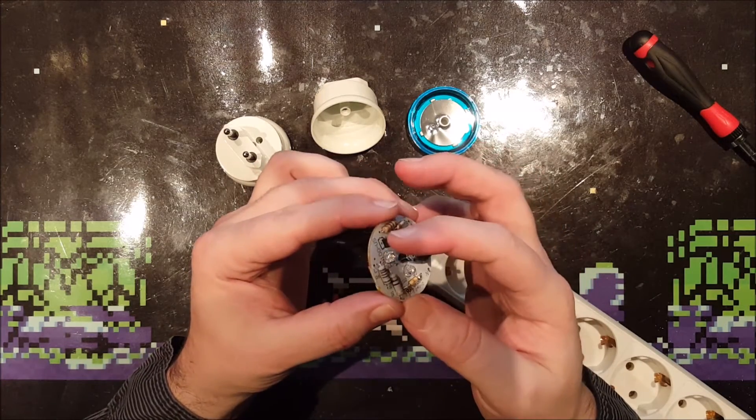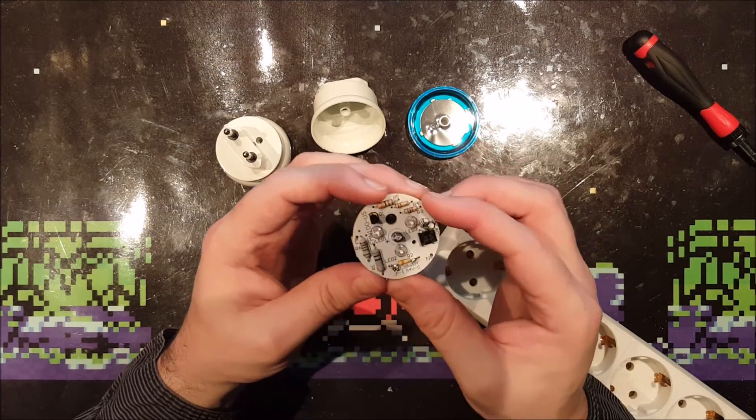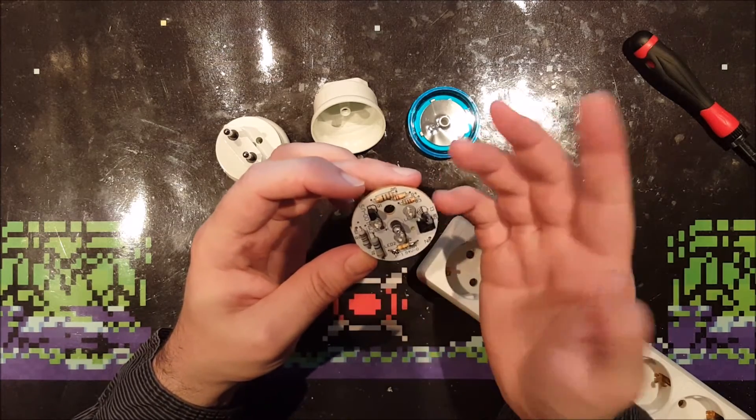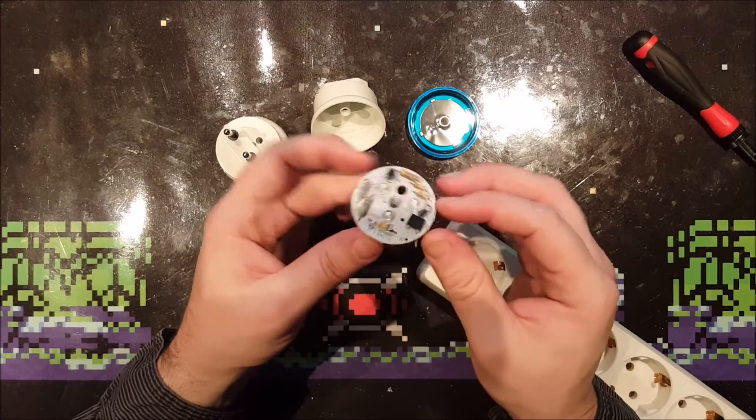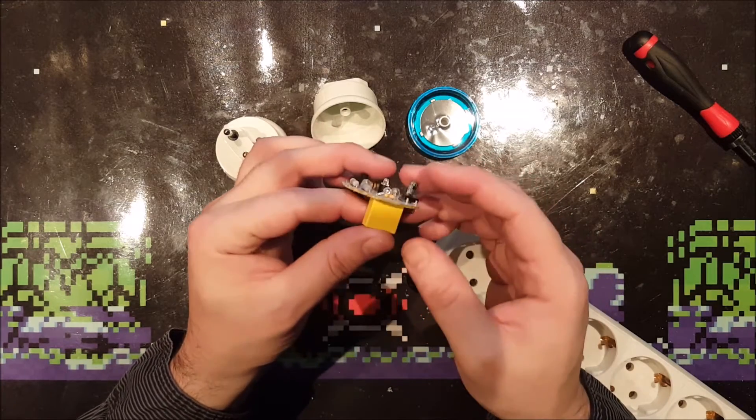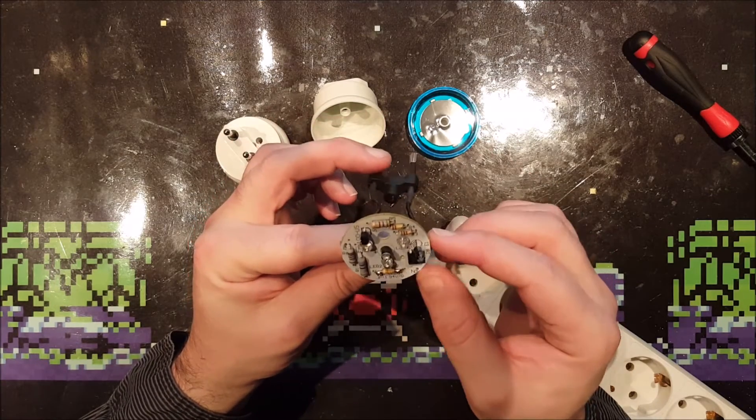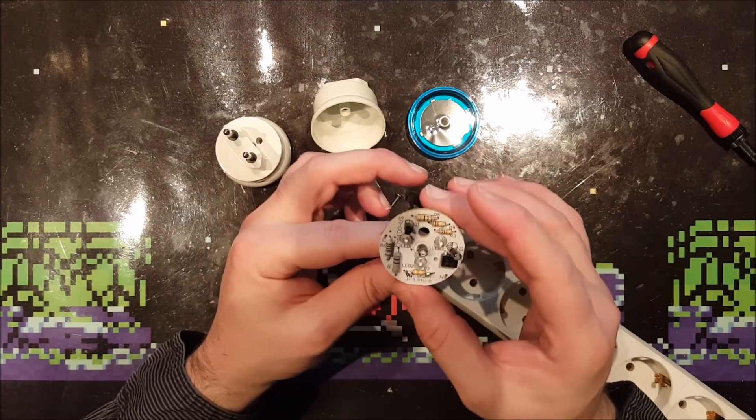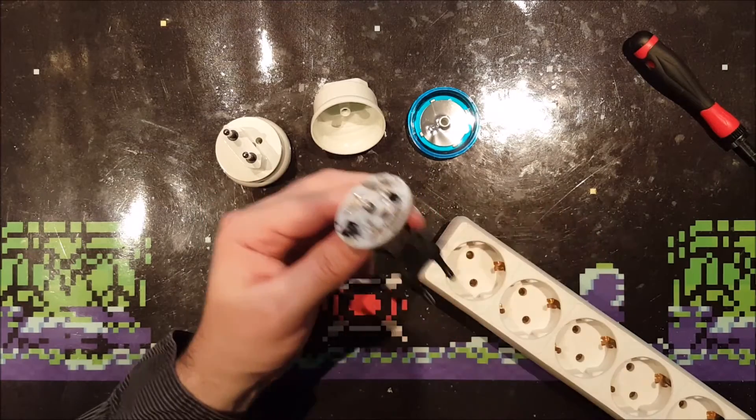I can see the transistor here which probably switches the LEDs. A bridge rectifier. A couple of resistors and a capacitor. So it's a capacitive dropper circuit. And this is probably the discharge resistor. Yeah, I'm going to draw a schematics of it. And I'll be back in a moment.